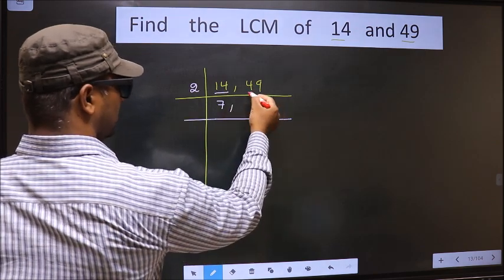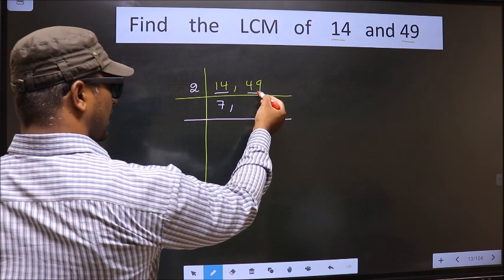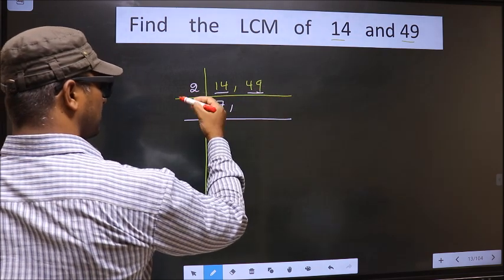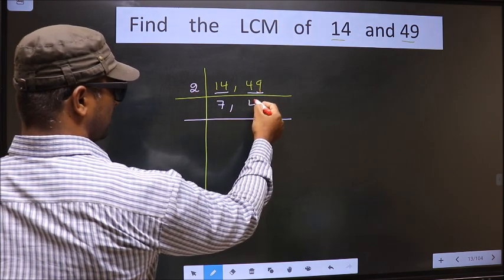The other number, 49. 49's last digit is 9, not even. So this number is not divisible by 2. So we will write it down as it is.